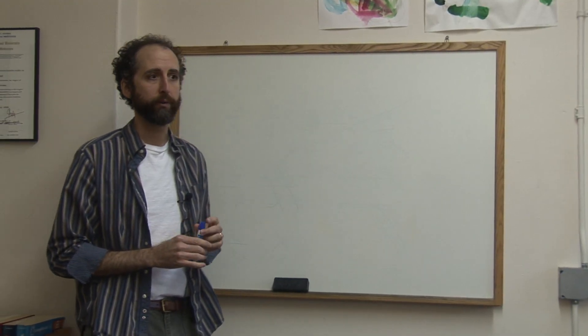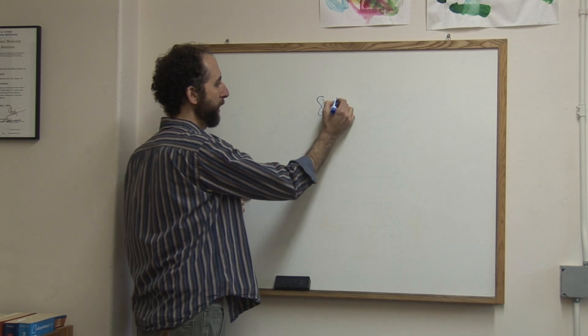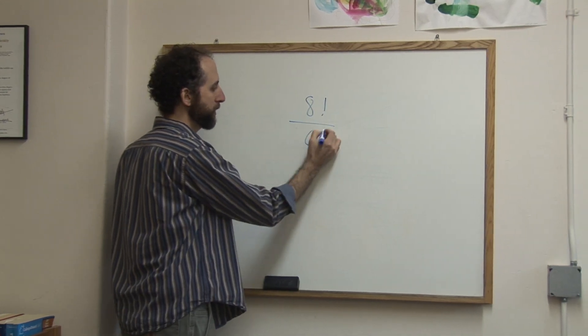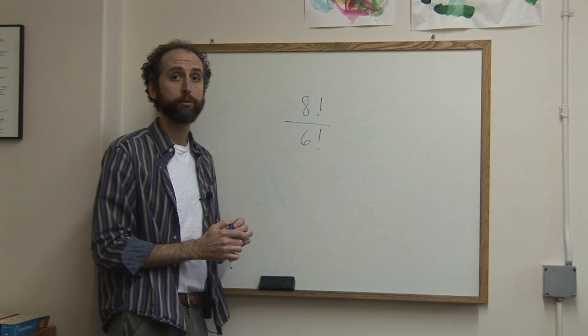Let's take a look at dividing factorials. So when you've got a number like 8 factorial over 6 factorial, really there's a part of this that's redundant in the two.